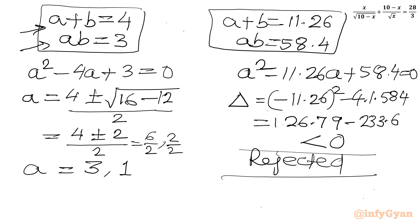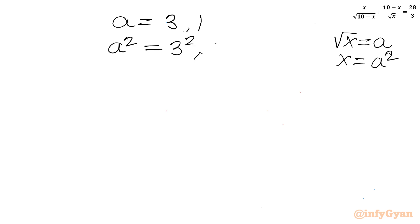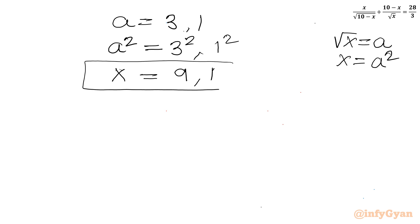Our substitution was √x = a, so x = a². With a = 3 and a = 1, squaring gives x = 9 and x = 1. So we have two solutions: x = 9 and x = 1.